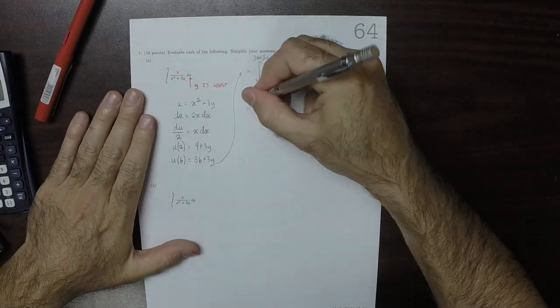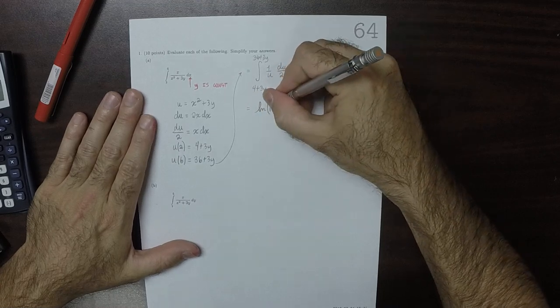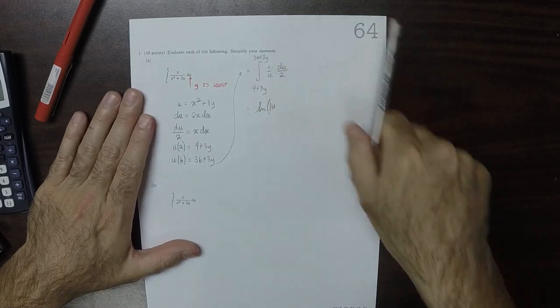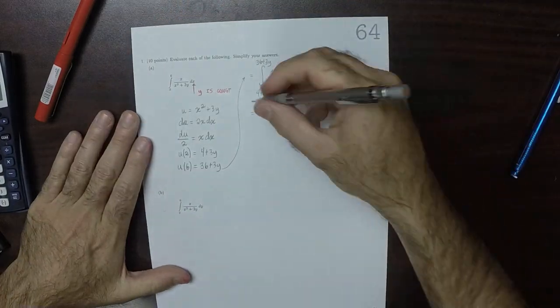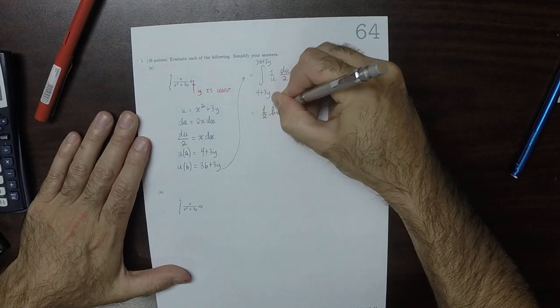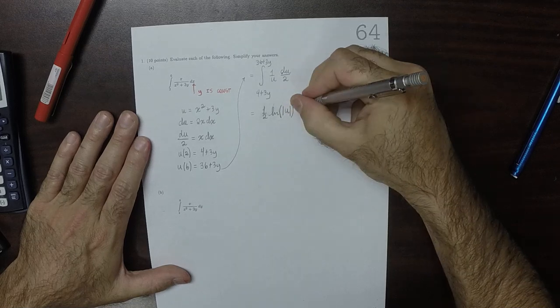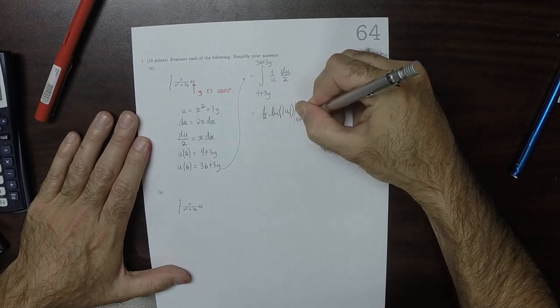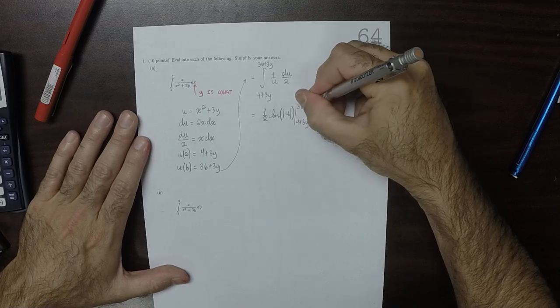So that is the natural log of the absolute value of u. Let's get that 1 half. 1 half. The natural log of the absolute value of u, evaluated from 4 plus 3y to 36 plus 3y.